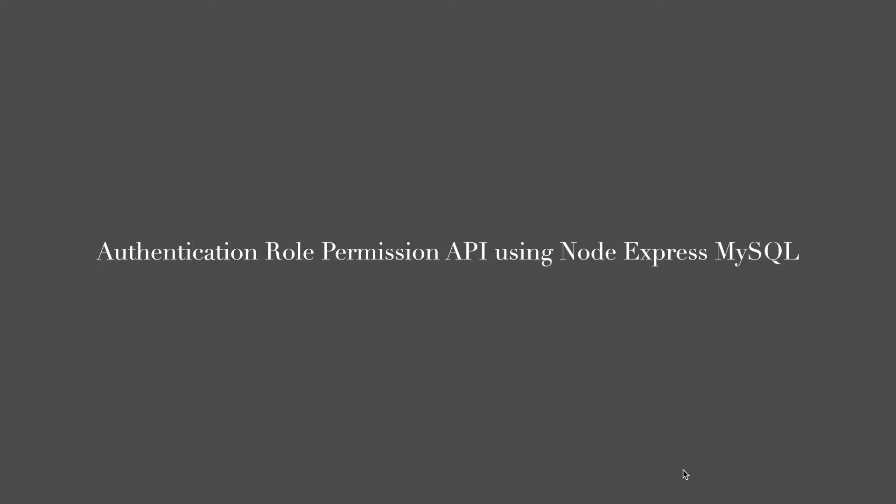Welcome back to the Node.js and Express.js tutorial. We will learn how to build a Node.js, Express.js, Passport.js, SQLite, and MySQL or MariaDB API authentication logged in with role-based permissions. In the previous tutorial, we used simple authentication with just a username or email and password that returns a JWT token.